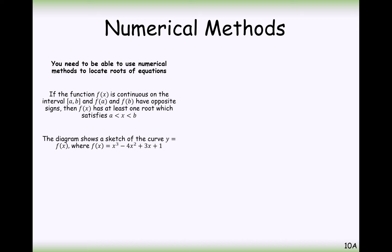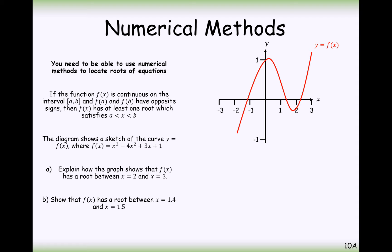Right, so let's get stuck into a question then. The diagram shows a sketch of the curve Y equals F of X, where F of X equals X cubed minus 4X squared plus 3X plus 1. This is the graph of the function. We've got a couple of questions to answer here using the corollary that we looked at earlier. A corollary, just so you know, is like a baby theorem. It generally follows on from a bigger theorem. Explain how your graph shows that there is a root in between 2 and 3. So 2 is here, and 3 is here.